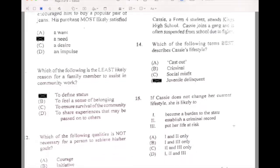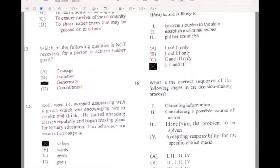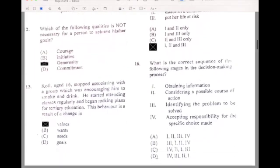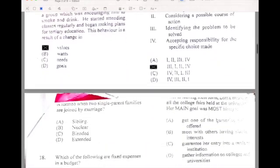Number fifteen, if Cassie does not change her current lifestyle, she's likely to do what? D, because all of the above: become a burden to the state, establish a criminal record, and put her life at risk. Let's go with number sixteen, which is the following sequence in the following stages in decision making. So our answer for number sixteen is B. We're going to identify the problem, then obtain the information, then consider the possible action, and then finally accepting the responsibility of the choice that we make.